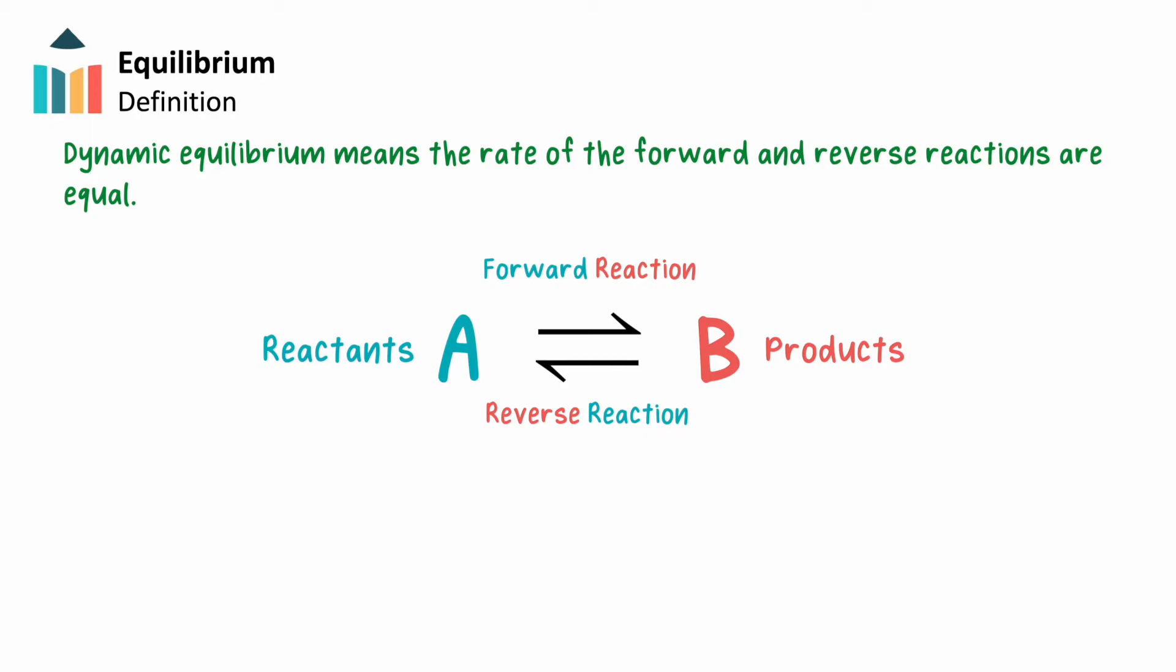As we continue and begin to look at chemical reactions, remember that this dynamic equilibrium state does not mean that the number of reactant and product species are equal, but rather it is the rates of the forward and reverse reactions that are the same.